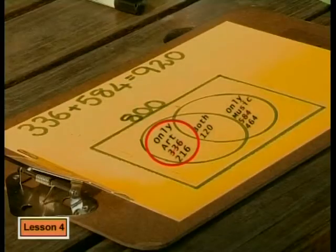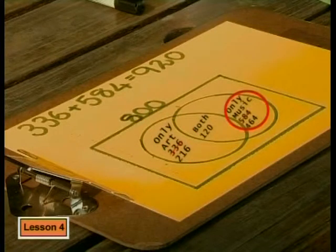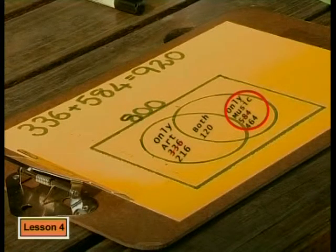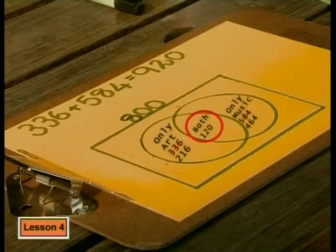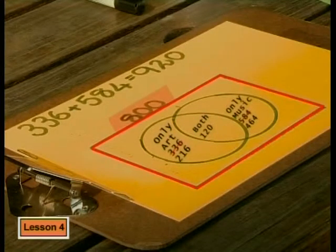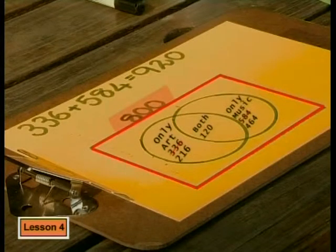Let's look at that diagram again — it's a great example of a Venn diagram with intersecting subsets. The subset of people who only want to do art is 216. The subset of people who only want to do music is 464. And the intersecting area shows that there are 120 people who want to do both. That accounts for all 800 students. It's very important to notice that altogether the numbers must add up to the total sample space — they cannot come to more than the sample space.